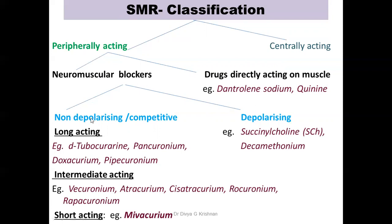Neuromuscular blockers can be divided into non-depolarizing or competitive blockers and depolarizing blockers. Based on duration of action, the non-depolarizing blockers are further divided into long-acting (e.g., D-tubocurarine, pancuronium, doxacurium, pipecuronium), intermediate-acting (e.g., vecuronium, atracurium, cis-atracurium, rocuronium, rapacuronium), and shortest-acting (mivacurium). Under depolarizing blockers, examples are succinylcholine and decamethonium.